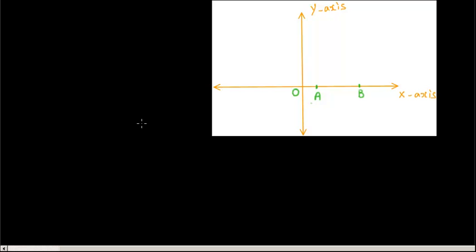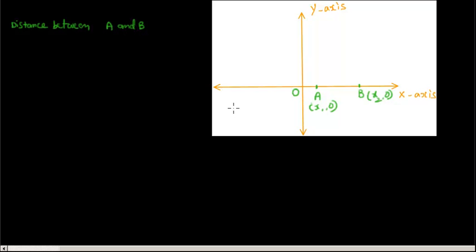Now we are learning about the distance between two given points which are present on the coordinate axis. Let A and B be two points on the x-axis. The coordinates of A can be written as x1, 0 and the coordinates of B as x2, 0. The distance between A and B can be written as the modulus of x2 minus x1.